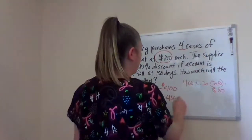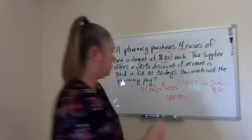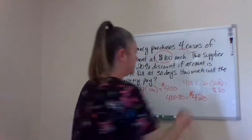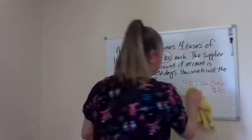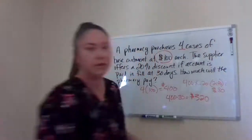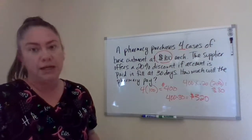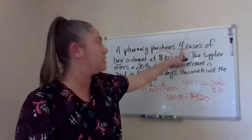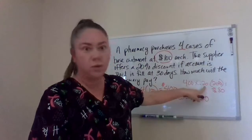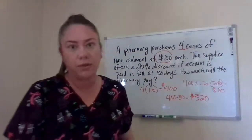So now we have to take $400 minus $80, and that gives us $320. So $400 minus $80 is $320. At the end, they purchased four cases at $100 each, totaling $400. $400 times the 20% off is $80. We subtract $400 minus $80 and we get $320.